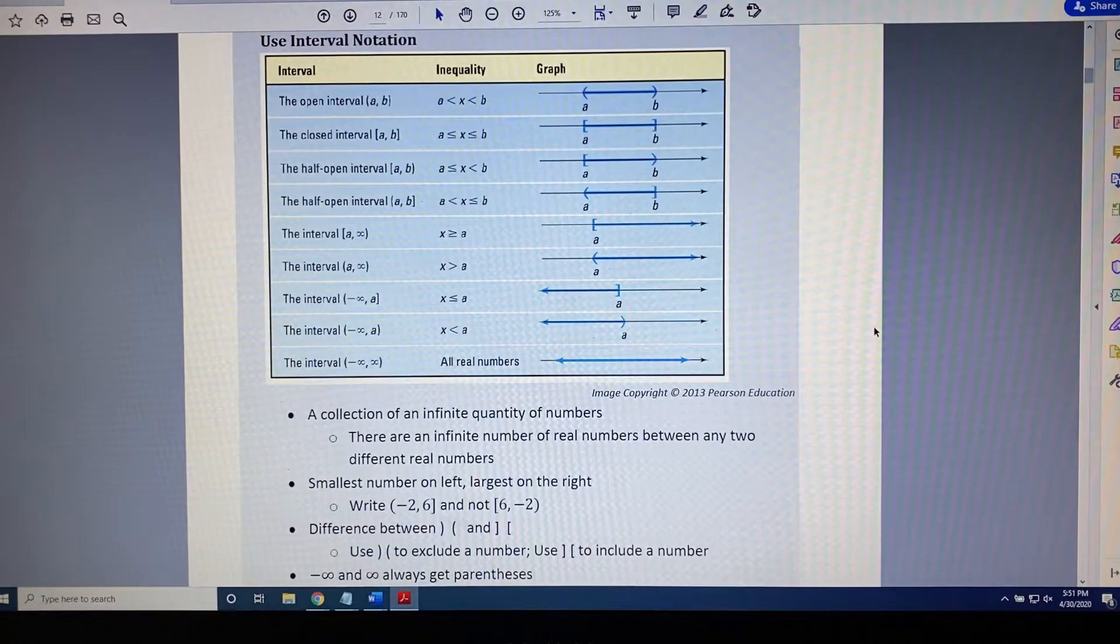Intervals, inequalities, and graphs are three different ways of communicating a collection of an infinite quantity of numbers to another person. An interval consists of two values separated by a comma with parentheses and or brackets before and after those values in various combinations.